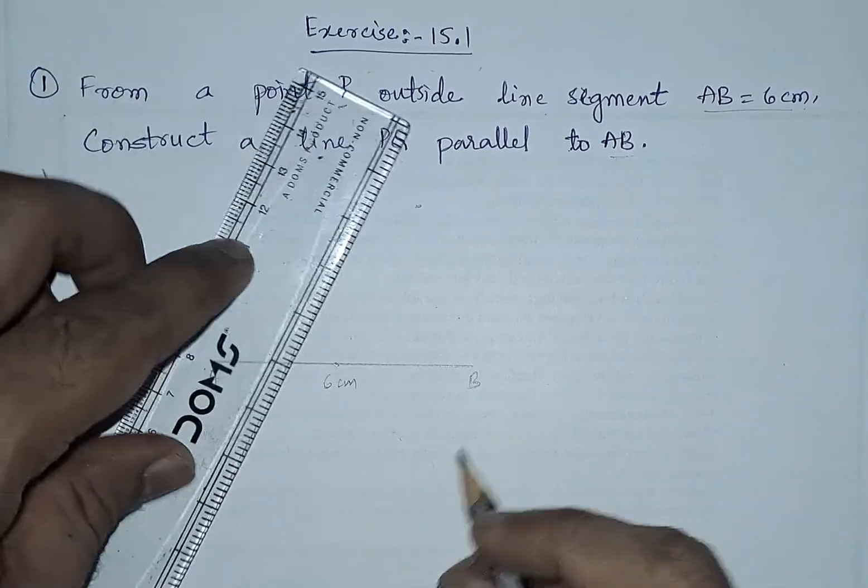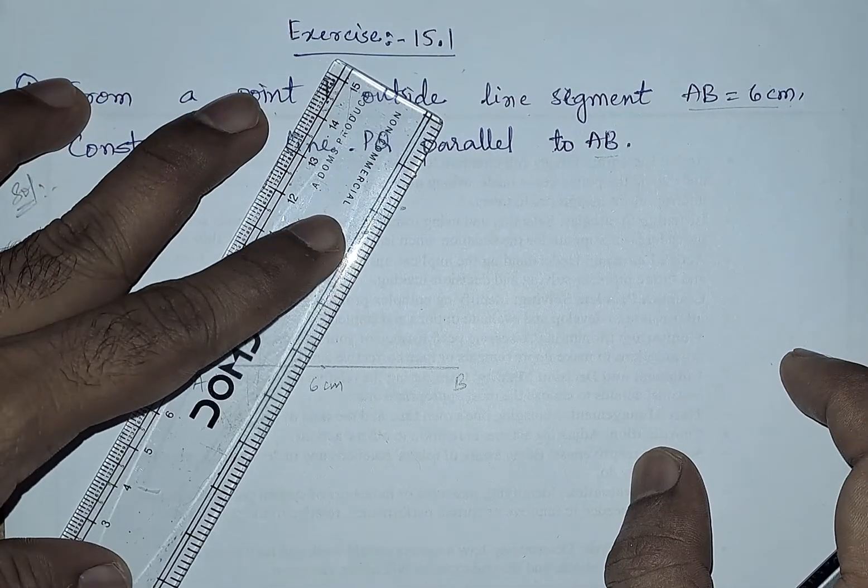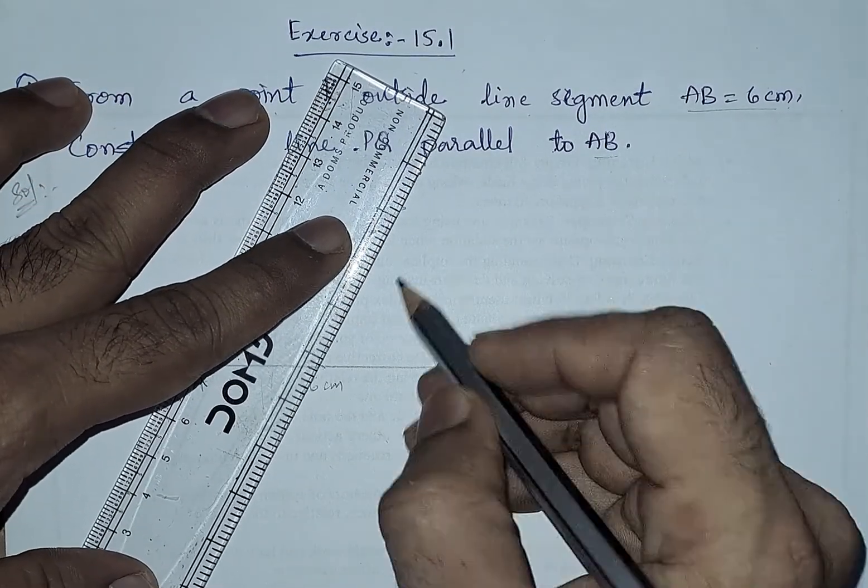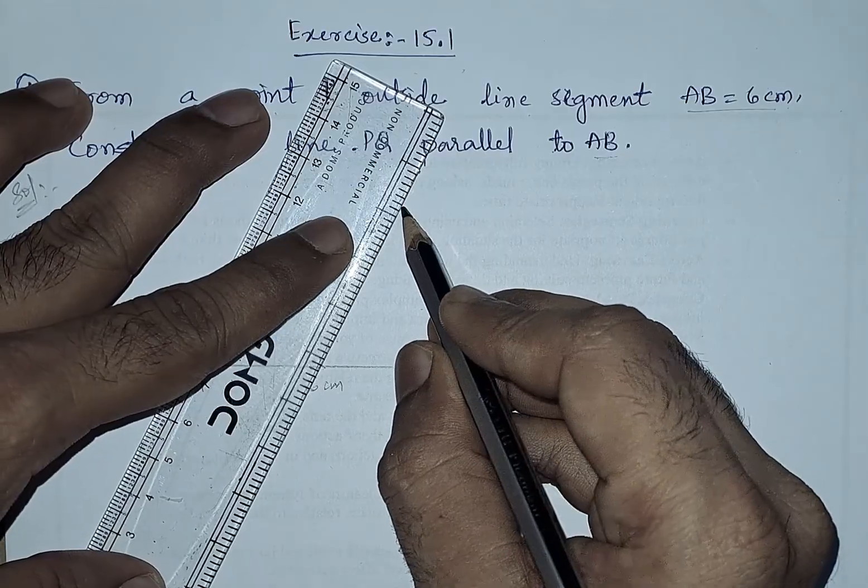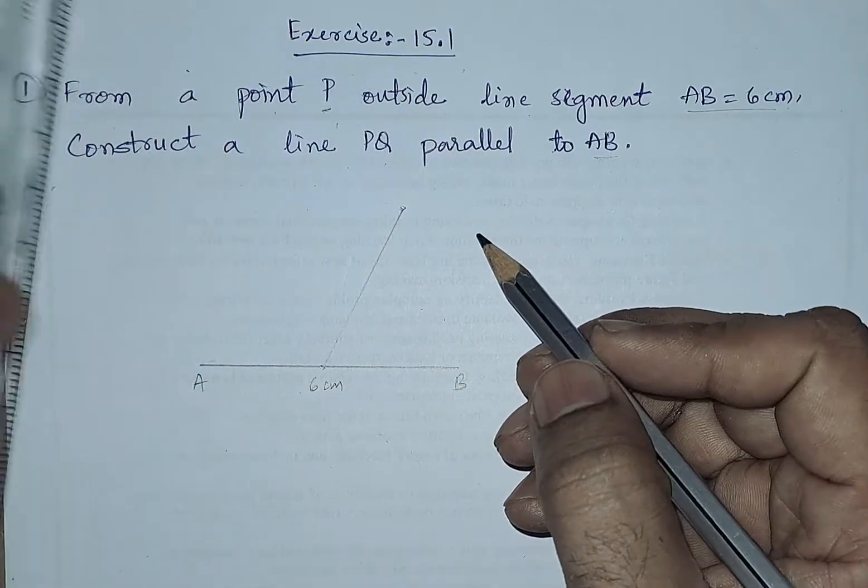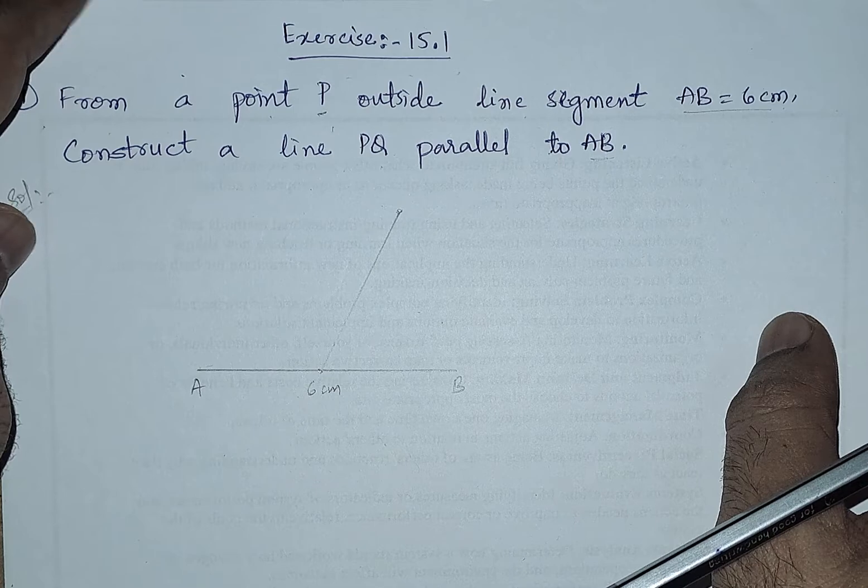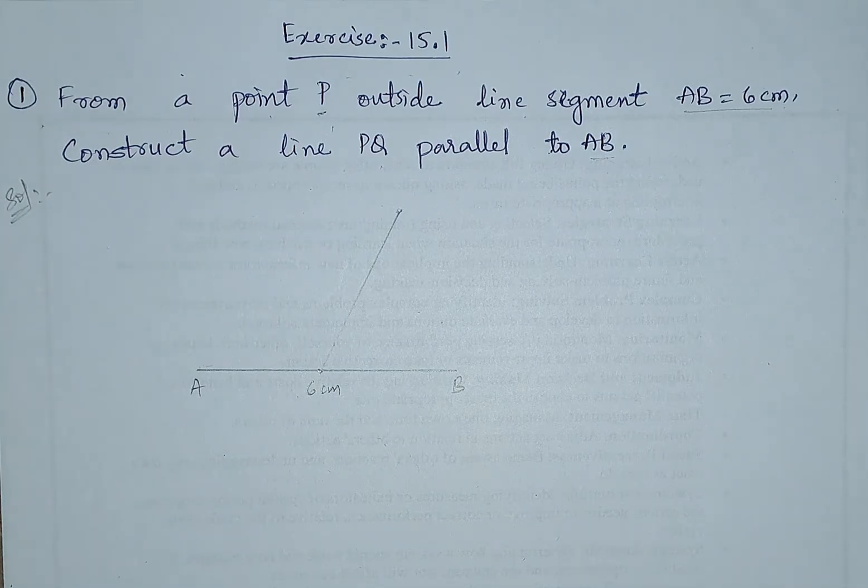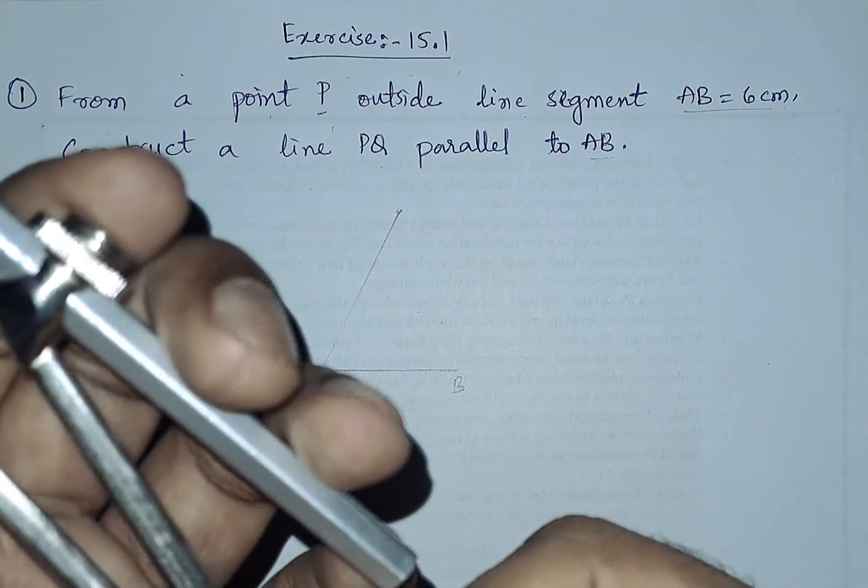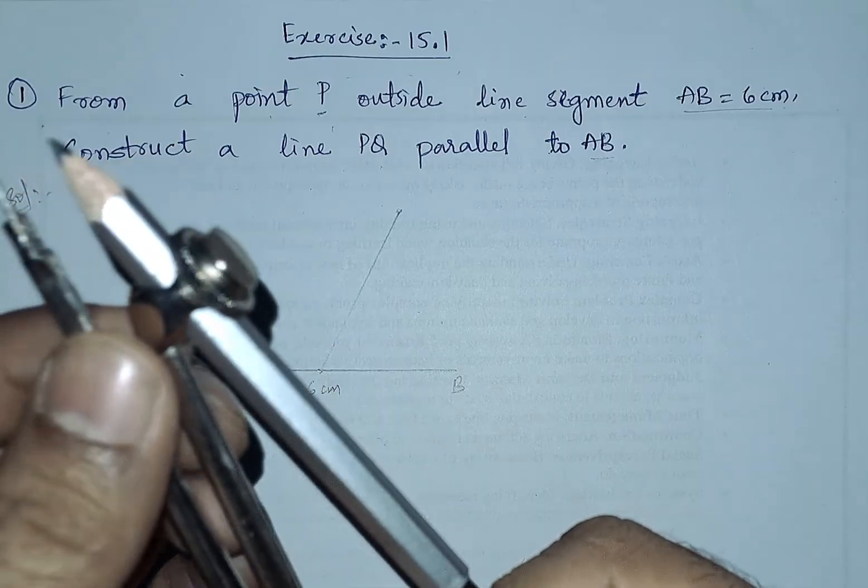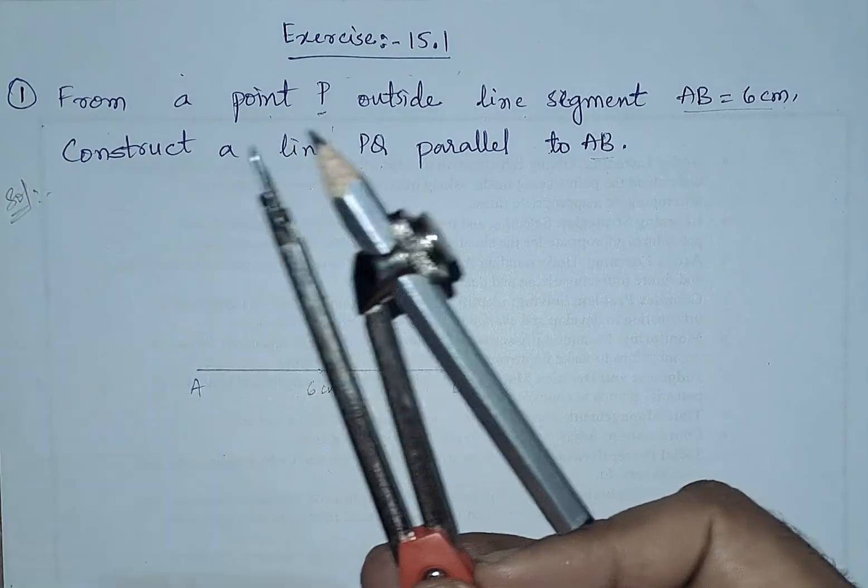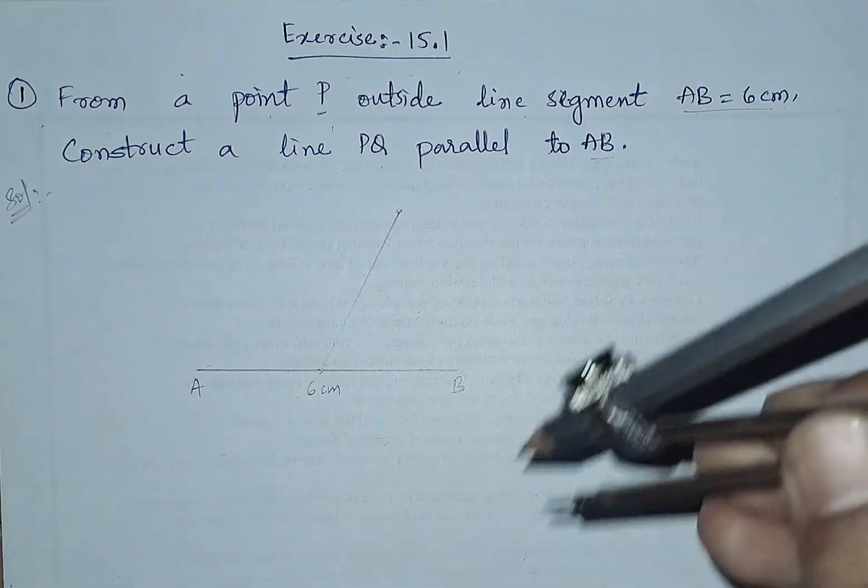Now we will draw a line to join these two points. After joining these two points, we will take the compass and with some radius we will draw an arc from this point.